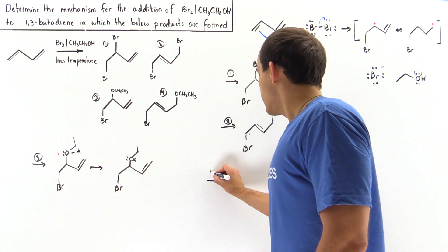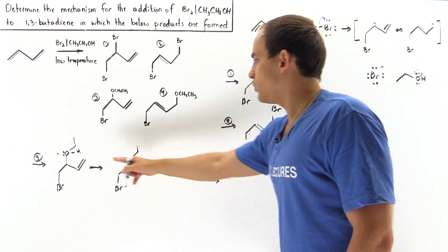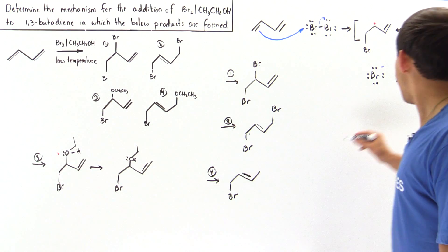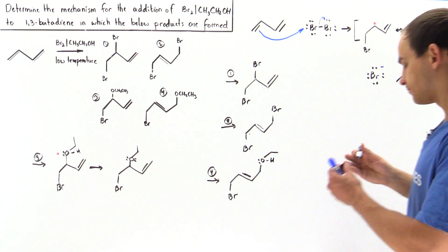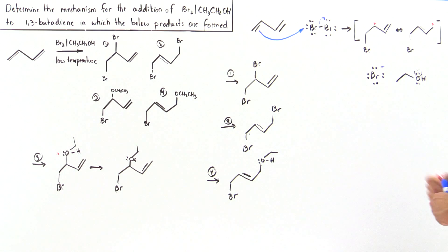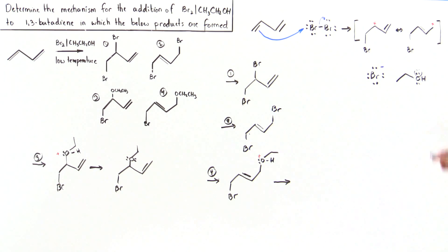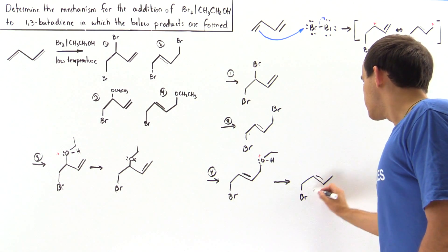For product 4, the mechanism is almost the same as product 3, except in this case the lone pair of electrons on oxygen attacks the other open 2p orbital — the other positive carbon. We have the same step, except our double bond is now here, our Br is still here, and our ethanol is attached here with the oxygen, H, CH₂, and CH₃. This intermediate again carries a positive charge on oxygen, so the last step is deprotonation by a base found in our mixture — either bromide or ethanol — and we form product number 4.